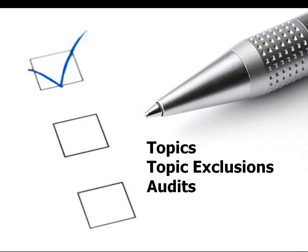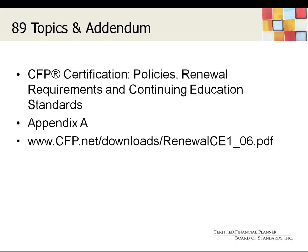Thanks, Christy. This is Vanessa again. I'm going to turn our attention to accepted topics — the most important thing I can say is that topics are key; this is really where the rubber meets the road. As I mentioned, there are 89 topics and an addendum. This information is available online via the PDF noted on your screen. I ask you to refer to the topics list in the addendum before you submit a program application to ensure your session meets topic requirements. We really want to accept all of your programs, but we're not always able to make that connection between your program's content and CFP Board's accepted topics.